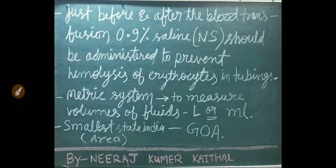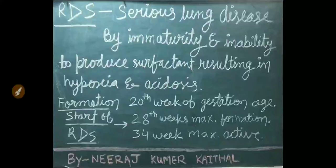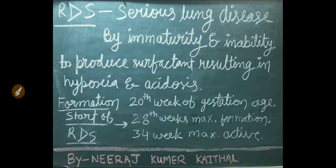Just before and after blood transfusion, 0.9 percent saline (normal saline) should be administered to prevent hemolysis of erythrocytes in the tubing. In the metric system, liter and milliliter are mostly used to measure volume of fluids. Smallest state of India according to area is Goa.